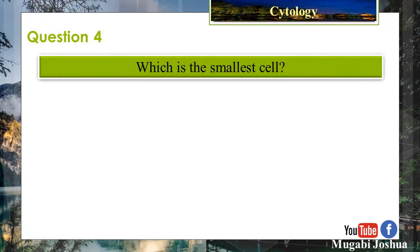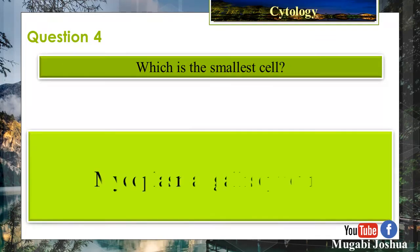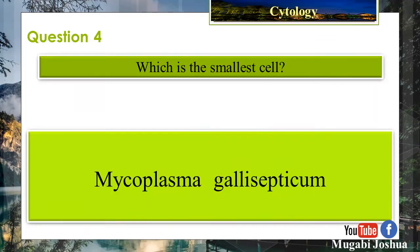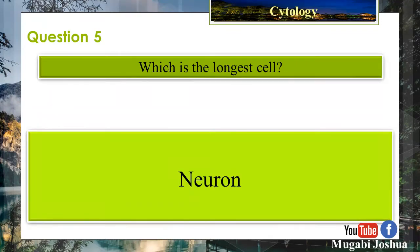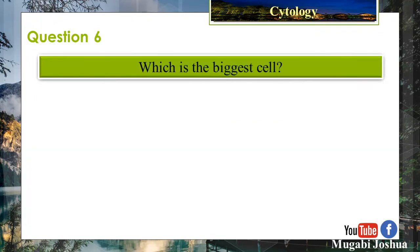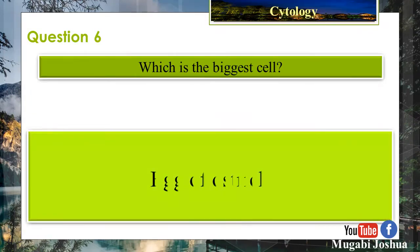Question 4: Which is the smallest cell? Mycoplasma gallisepticum. Question 5: Which is the longest cell? Neuron. Question 6: Which is the biggest cell? The egg of an Ostrich.